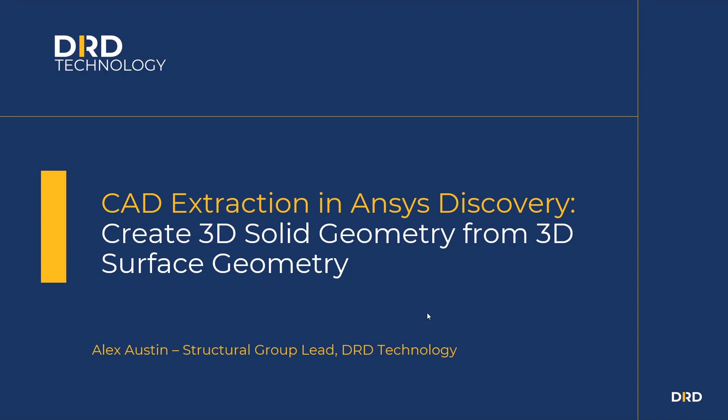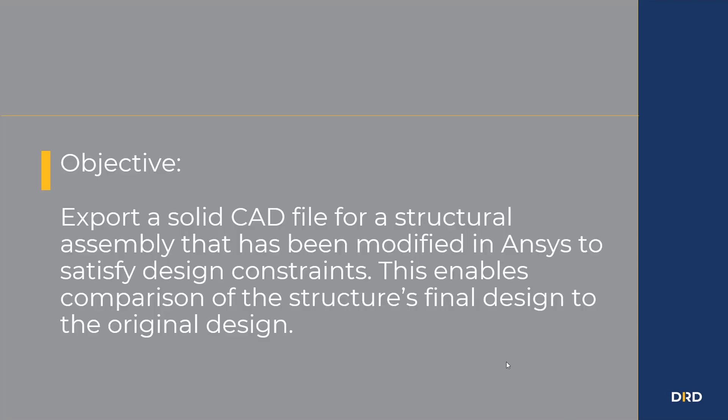I'm going to show you how to create 3D solid geometry from 3D surface geometry. The whole point of this is to be able to bring that 3D solid geometry into a third-party CAD system like Creo Parametric for comparison to an original design. Typically the finite element analyst will take a solid structure, likely de-feature and convert it to surface geometry for simulation purposes, make design changes to satisfy design constraints, and then continue iterating until they are satisfied with the design.